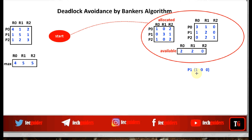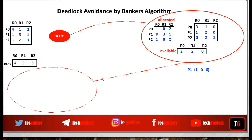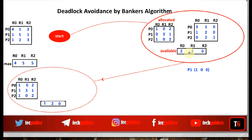Now suppose after some time the system receives another request from P1: P1 is requesting one instance of R0. We find out what the next state would be if this request is granted. The allocated matrix becomes 1,0,2 / 1,3,1 / 1,0,2, the available vector changes from 2,2,0 to 1,2,0, and the maximum future needs change: P1 is allocated one instance of R0, so in the future it will not request any more instances of R0.